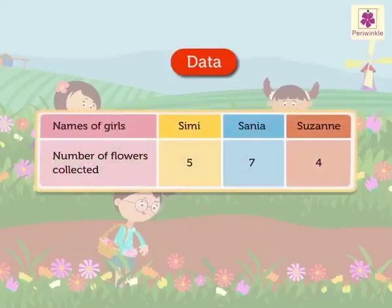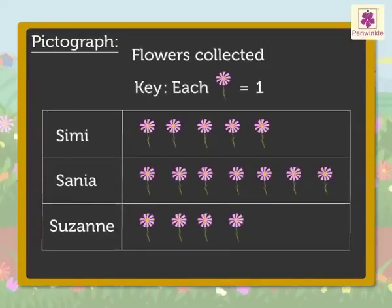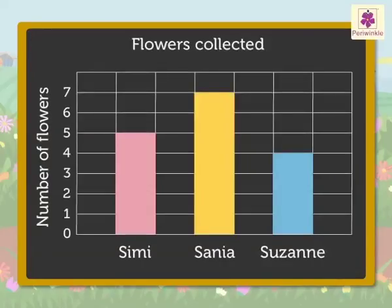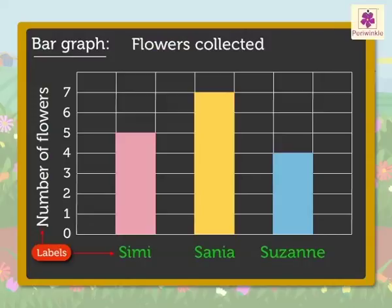Now let's look at the data chart of the flowers collected. We have already represented this data using a pictograph. Now another way of representing this data is through a bar graph. Every bar graph has: one, a title which tells us what the bar graph is about; two, both the side and the bottom of the graph have a label.